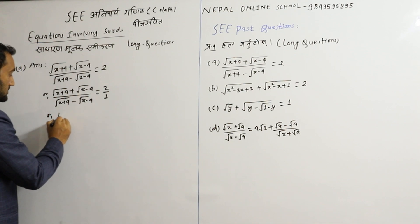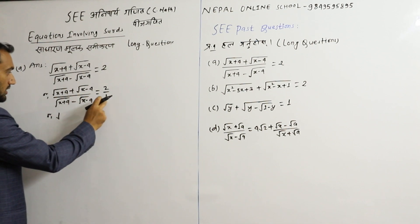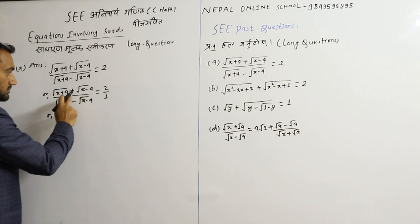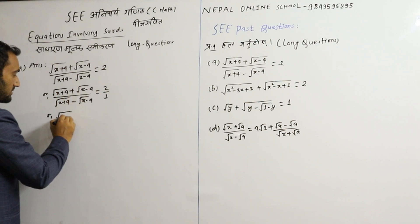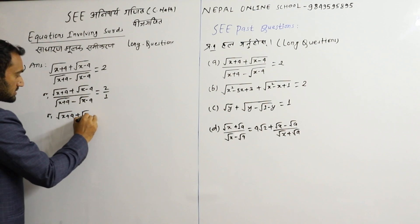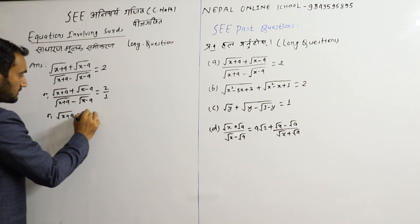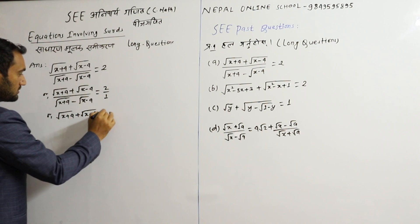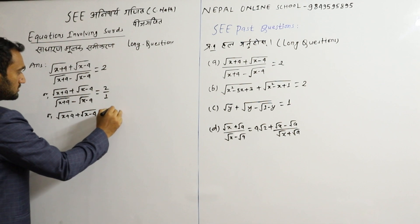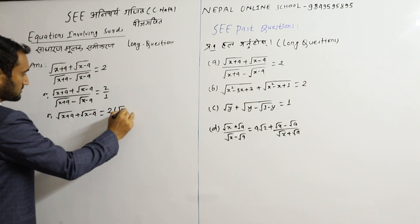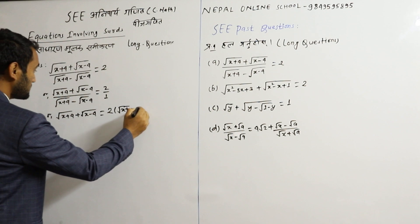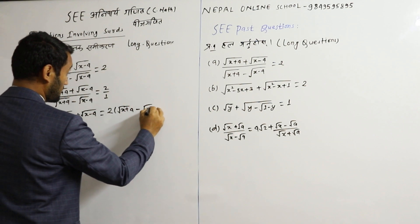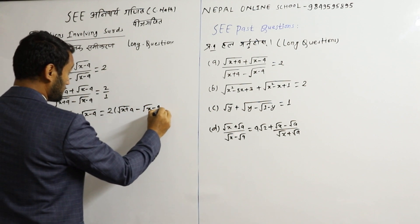So this is cross — dahari — 1 into root(x + 4) plus root(x − 4) — dahari — you have the same value here, plus root(x − 4), equal to about 2 into root(x + 4) minus root(x − 4).